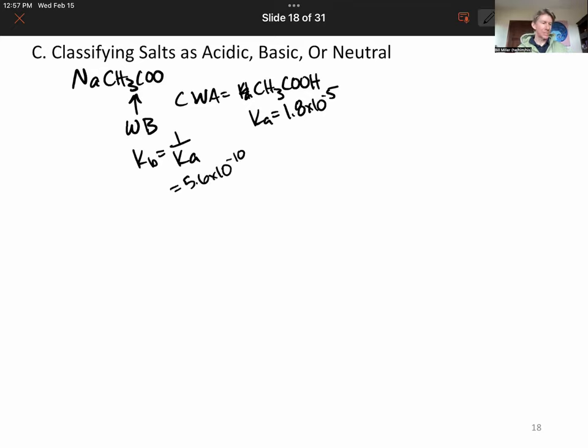Weak acids have conjugate weak bases; weak bases have conjugate weak acids. They go together. If you have anywhere between 0.1 greater than Ka or Kb less than 1.0 times 10 to the minus 14, that's going to qualify you as a weak acid or base.